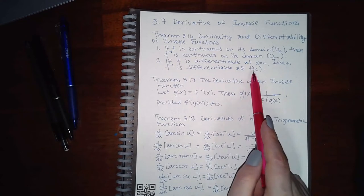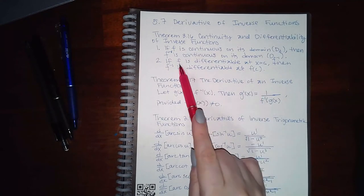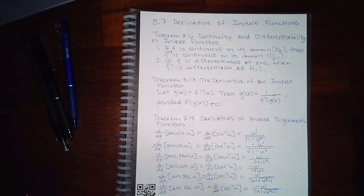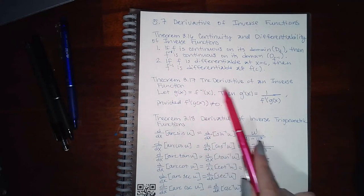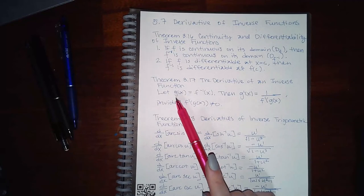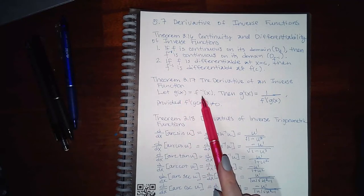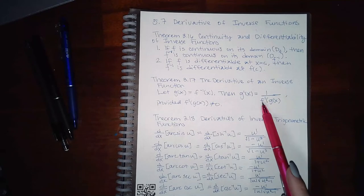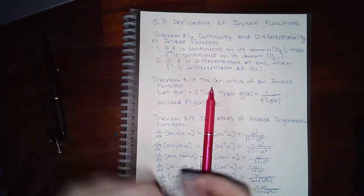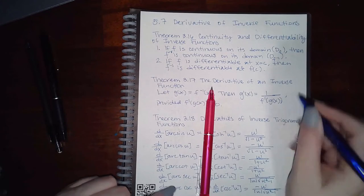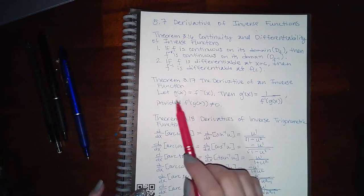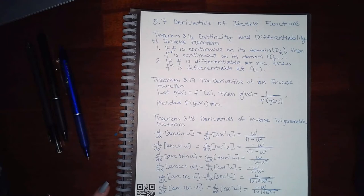The second part of Theorem 3.16 says if f is differentiable at a particular number, then f-inverse is differentiable at the corresponding y-value. Remember, inputs for f are x-values and inputs for f-inverse are y-values. Theorem 3.17 gives the derivative of an inverse function: if g(x) is the inverse of f, then g′(x) = 1 / f′(g(x)), provided that denominator is not zero.